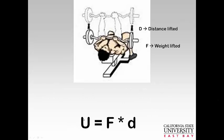The first concept is work, sometimes written as U, sometimes as capital W. Work is basically force times distance. For a weight lifter, the force is the weight lifted — the force due to gravity acting on the weights. The distance the weight lifter lifts is the D, and F times D gives you the work performed at the joint torque or muscle force level.